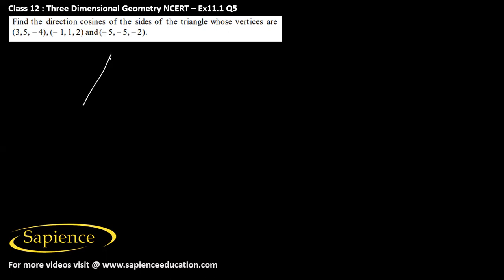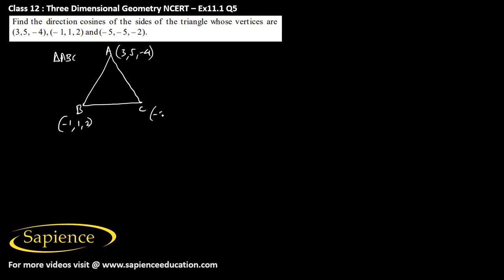Here it has been told that we have one triangle where the coordinates of the vertices A, B and C of the triangle ABC are given. The coordinates of vertex A are (3, 5, -4), for point B it is (-1, 1, 2), and point C it is (-5, -5, -2).